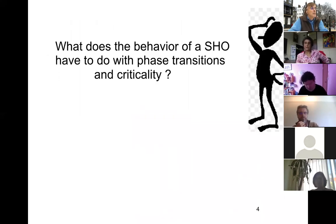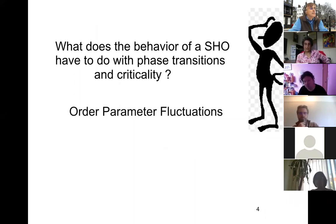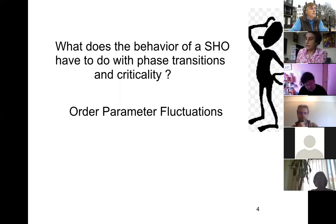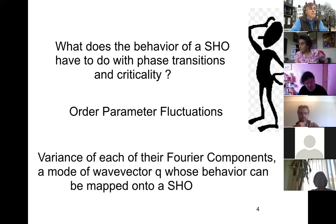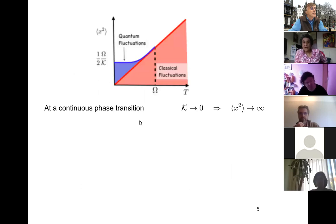What does the behavior of a simple harmonic oscillator have to do with phase transitions and criticality? Remember that at a phase transition, order parameter fluctuations play a very important role. We can consider the variance of each of the Fourier components one by one and map them onto a simple harmonic oscillator with amplitude x and frequency omega for each specific mode. Now at a continuous phase transition, the stiffness goes to zero and the variance diverges — this can happen at a classical or a quantum phase transition.